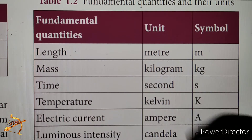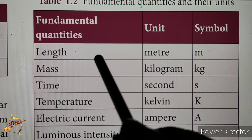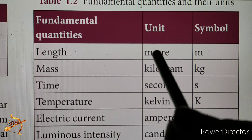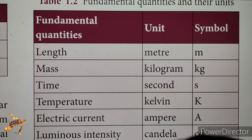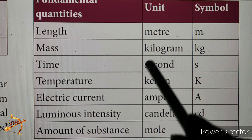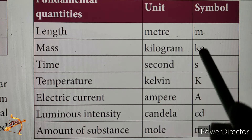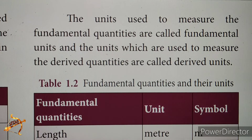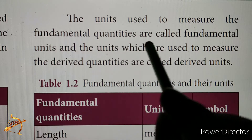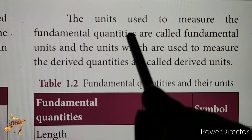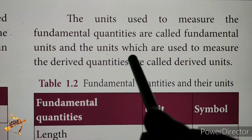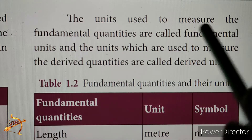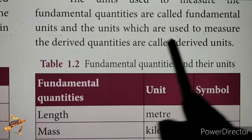In table 1.2, we look at fundamental quantities and their units. The units used to measure the fundamental quantities are called fundamental units, and the units used to measure the derived quantities are called derived units. These include derived quantity, derived units, fundamental quantities, and fundamental units.